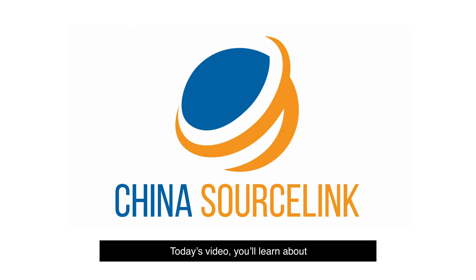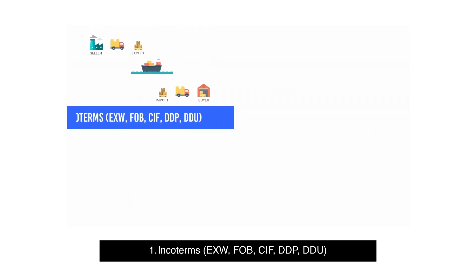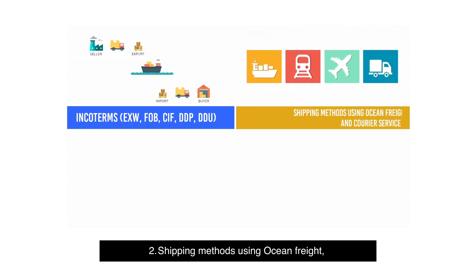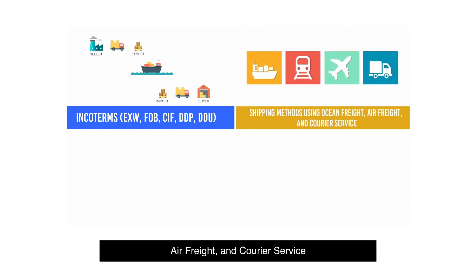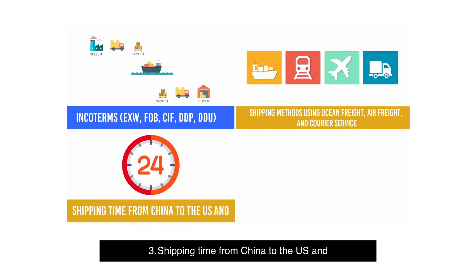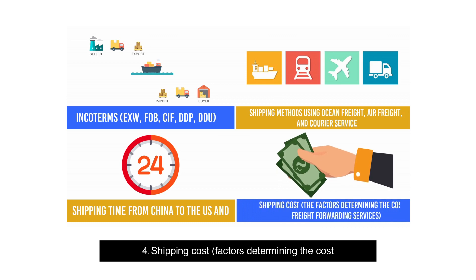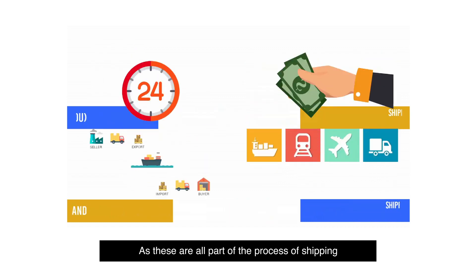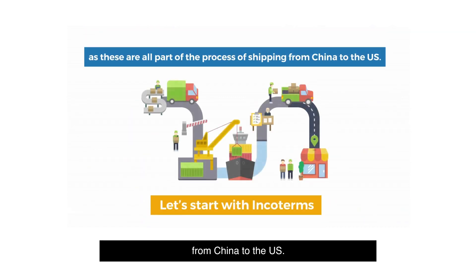In today's video, you'll learn about: 1. Incoterms — EXW, FOB, CIF, DDP, and DDU. 2. Shipping methods using ocean freight, air freight, and courier service. 3. Shipping time from China to the U.S. And 4. Shipping cost — the factors determining the cost of freight forwarding services, as these are all part of the processes of shipping from China to the U.S.